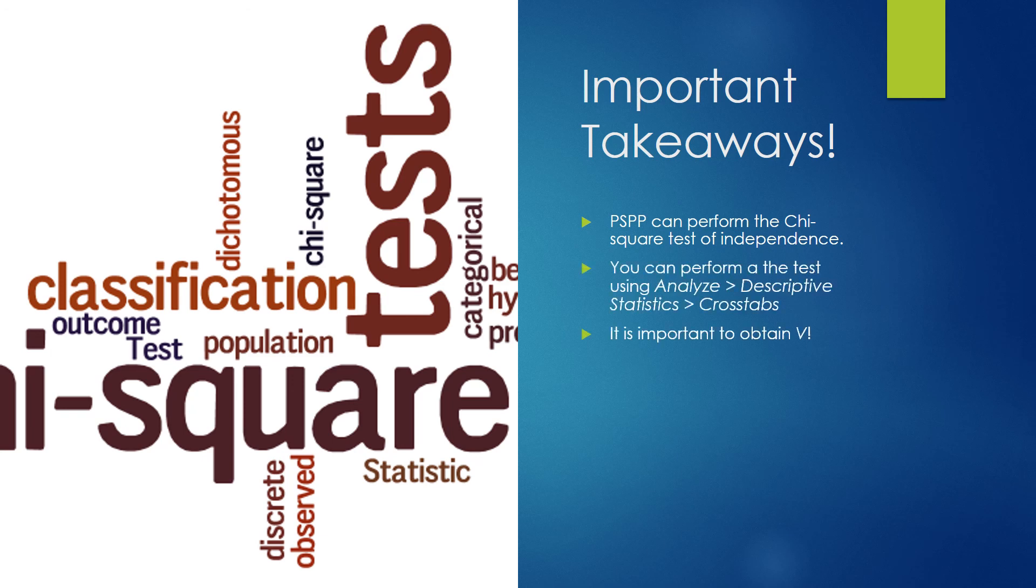Also, remember, PSPP does not call this test by its real name. Instead, it calls it by crosstabs. Also, if you obtain a significant result, you also have to attain Cramer's V. And that's hidden under the phi option we checked off earlier.